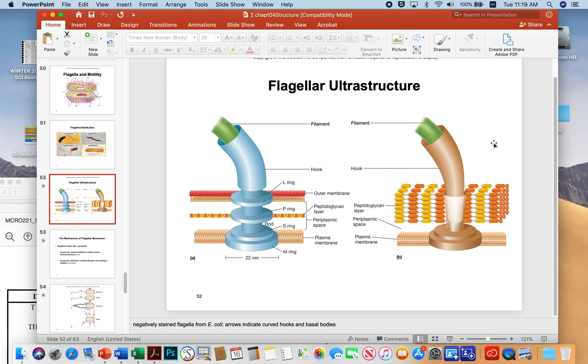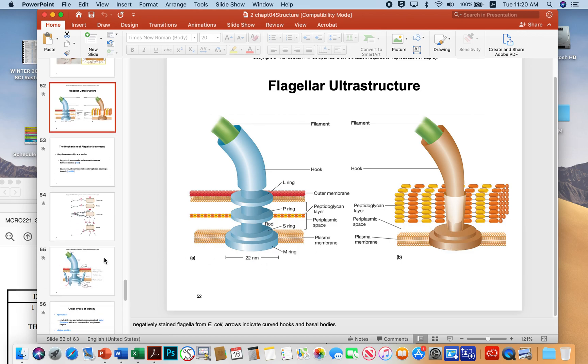The gram-positive is relatively more simple because it just has the SM ring and doesn't have the other rings, the P or the L ring that you see. You can tell just based on the complexity of the envelope that dictates the complexity of the basal body motor.